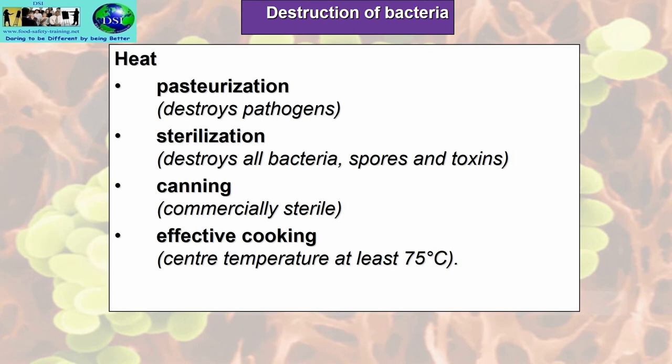How do we destroy bacteria? We can do it through pasteurization — about 63°C and above — which destroys pathogens. Sterilization is difficult to achieve in a normal kitchen because it's 121°C or in excess of that for a period of time. If we achieve that temperature it destroys all bacteria, spores, and toxins. That temperature is used in autoclaves and heat under pressure. Canning is classed as commercially sterile and uses the sterilization process at 121°C and above.